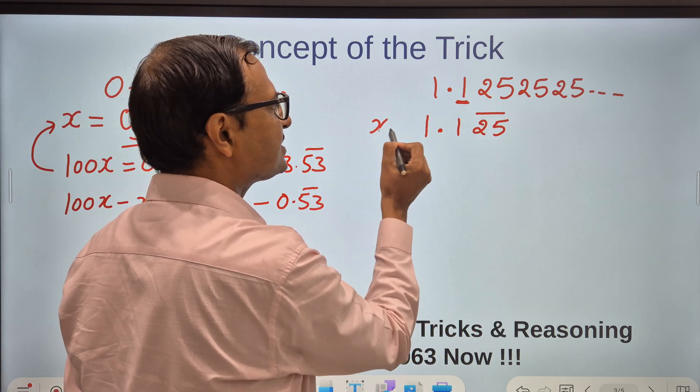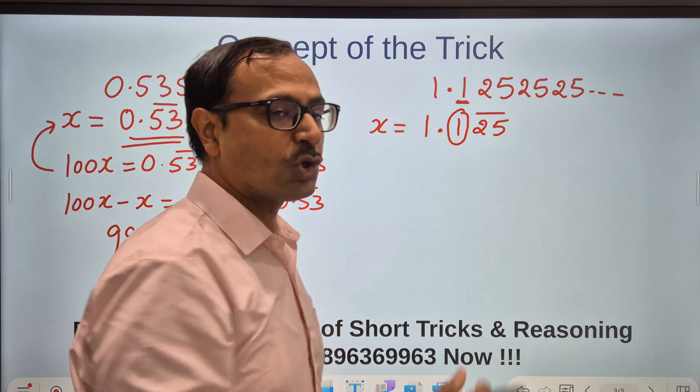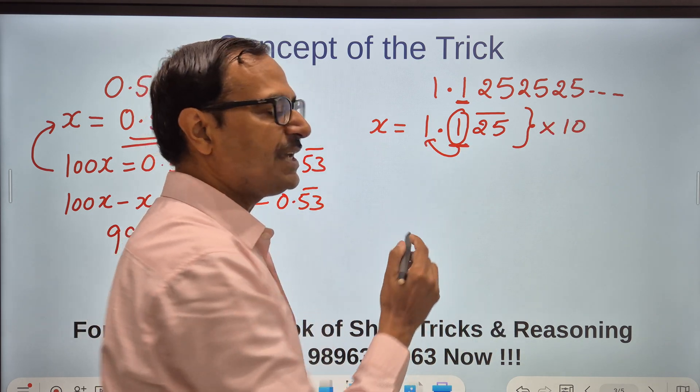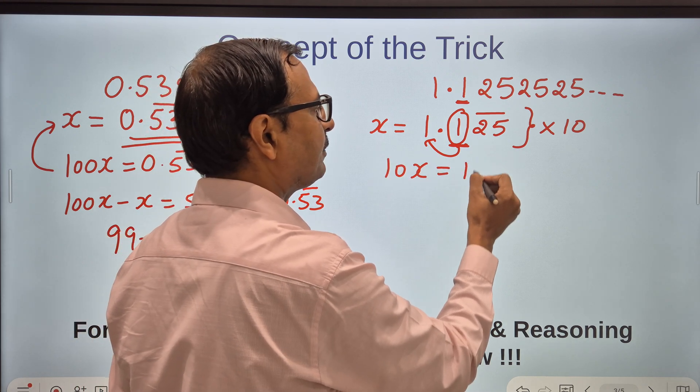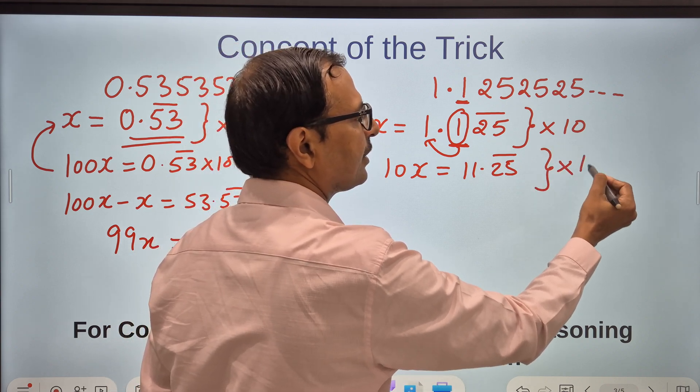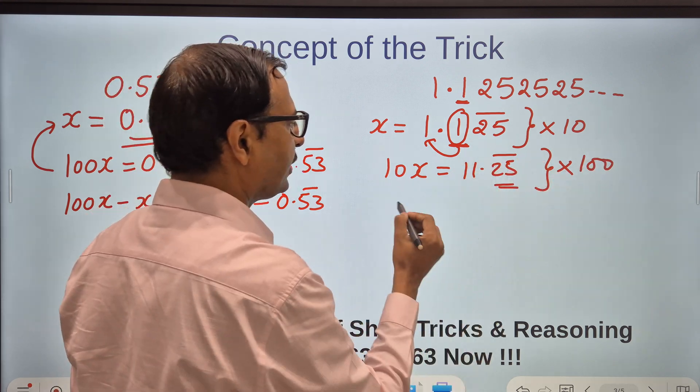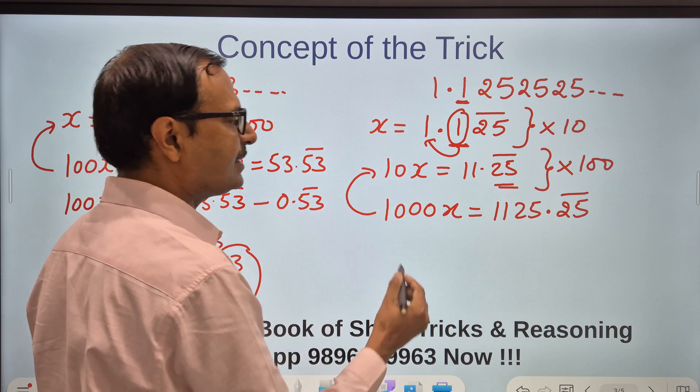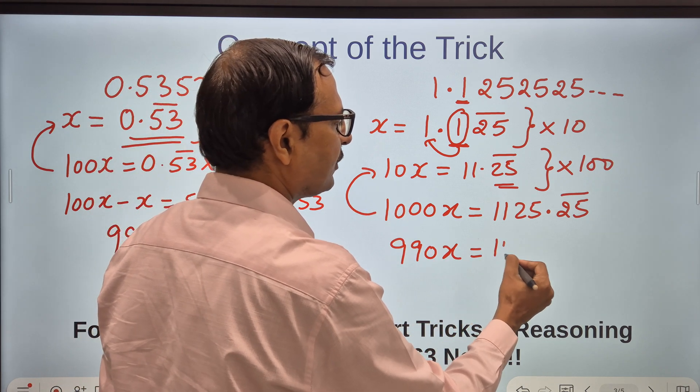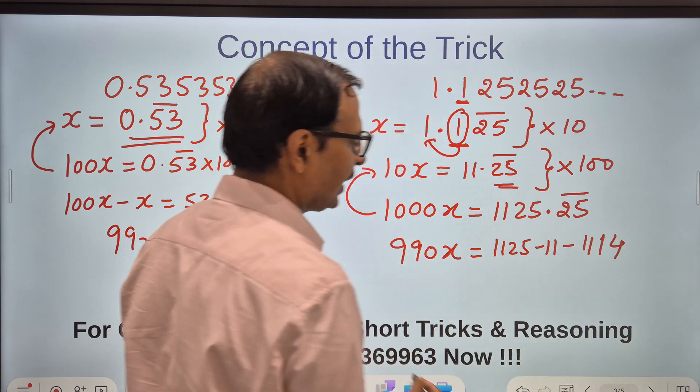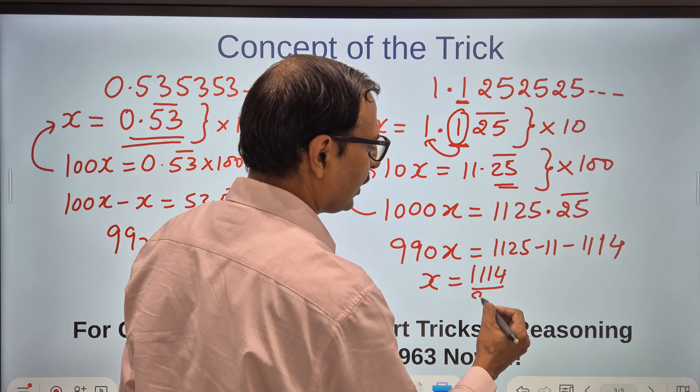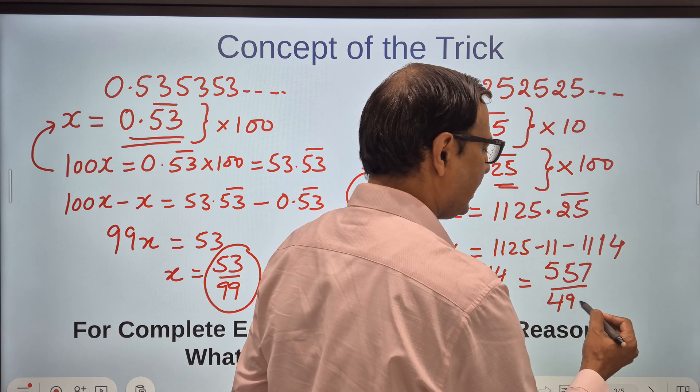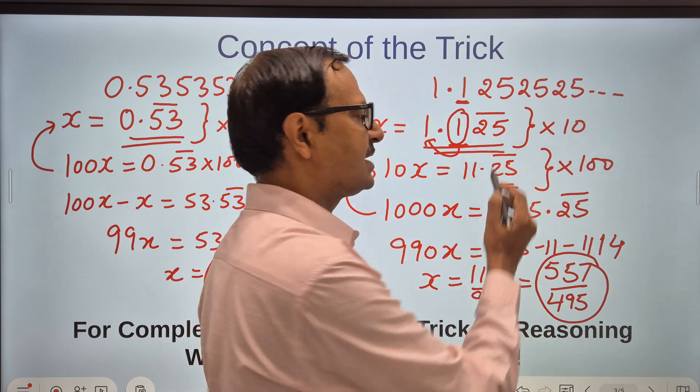What happens here is one extra step is added because x is this, so we have a digit which is not repeating on the right-hand side of the decimal. First we multiply this equation by 10 so that this digit shifts towards the left. So 10x becomes 11.25 bar. And now multiply this equation by 100 because there are two digits which are repeating. So 10 into 100 gets you 1000, and this becomes 1125.25 bar. And now when you subtract like this, you get 990x equals 1125 minus 11, which is 1114. So the value of x is 1114 upon 990. Obviously there is a common factor between these two which reduces to 557 upon 495, and this is the rational equivalent of this non-terminating recurring decimal.